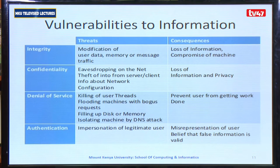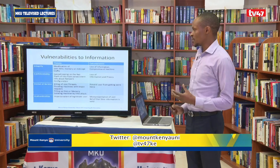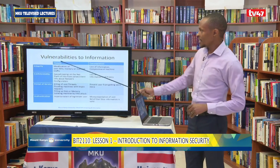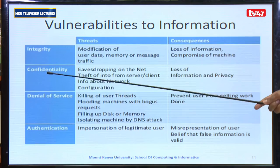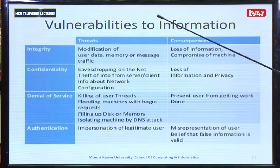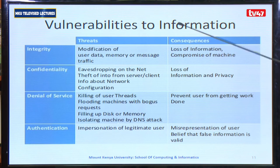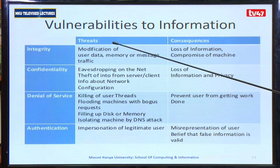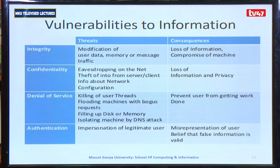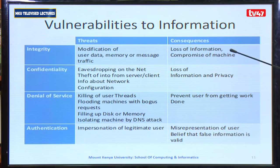To further understand vulnerability and the CIA triad: the moment any of these — integrity or confidentiality — is compromised, we call it a threat, and every threat has a consequence. For example, if the integrity of the system is compromised, then modification of user data happens, and memories or messages and traffic are modified. The consequence is loss of information and compromise of the machine.